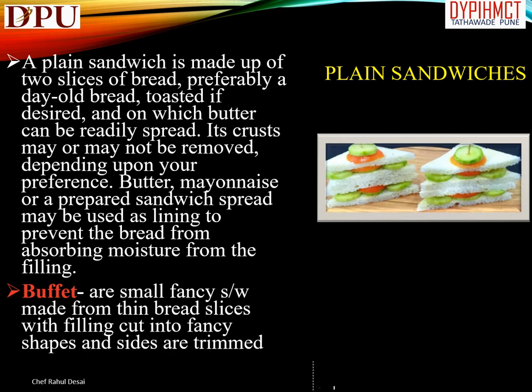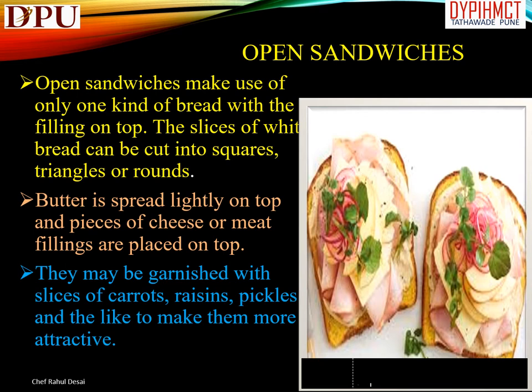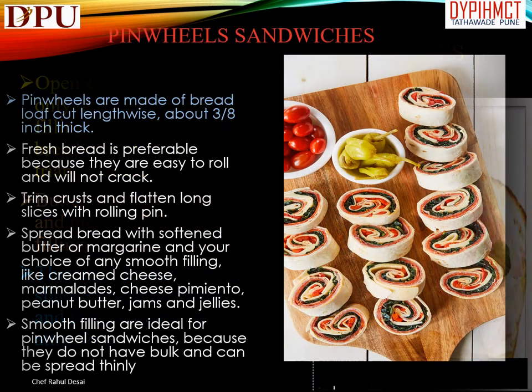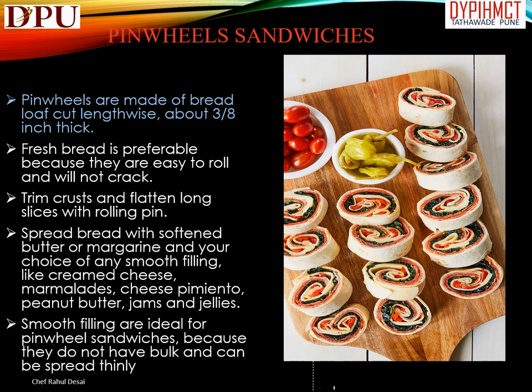Open sandwiches make use of only one slice of bread with the filling on top. The slices of white bread can be cut into squares, triangles, or rounds. Butter is spread lightly on top and pieces of cheese or meat fillings are placed on top. They may be garnished with slices of carrots, raisins, pickles, and the like to make them more attractive.